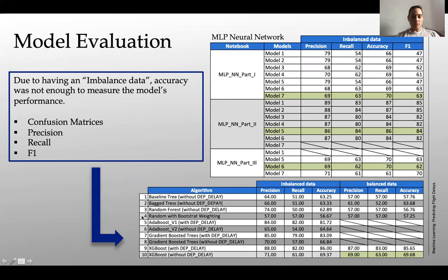Then you can see these two spreadsheets. The one in the bottom is classified as my machine learning models. You've got baseline trees, bagging trees, random forests, all the way down to XGBoost. And here are your metrics: precision, recall, and accuracy. Now you'll see that in some of them, it says without departure delay and in other ones with departure delay. And you also have the data classified as imbalanced and balanced.